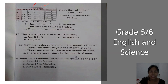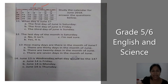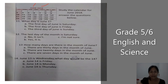Number thirteen: how many days are there in the month of June? A — there are 30 days in the month of June. B — there are 20 days. C — there are 7 days. Number fourteen: June 13 is Wednesday — what day will be the 14th? This is June 13; now what day will June 14 be?